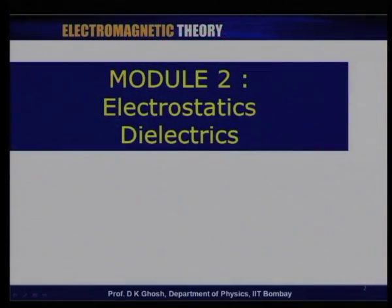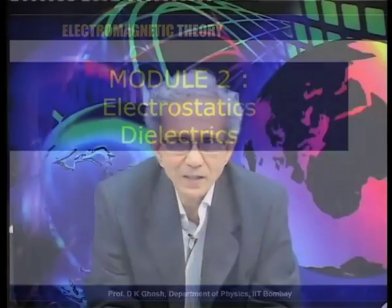We had seen that in a source-free region the potential satisfies what is known as Laplace's equation, and over the last several lectures we have been talking about various methods of solving Laplace's equation. What we wish to do now is to talk about a different class of material where the electric field has a totally different effect. These materials, as opposed to conductors, are known as insulators in common language, or dielectrics.